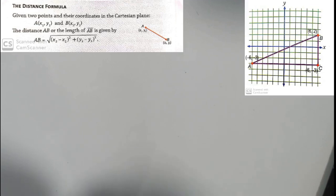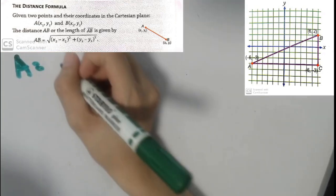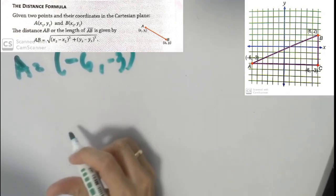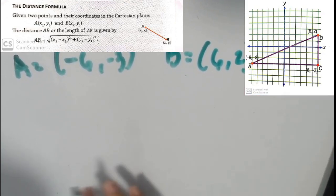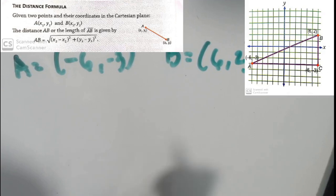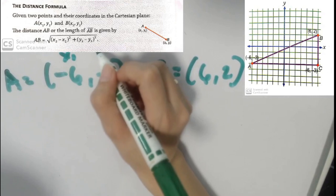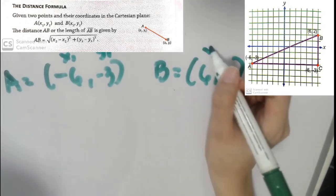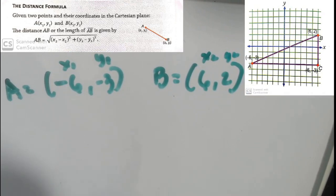For us to understand better, we're going to work on our first example. Given here a triangle drawn in a Cartesian plane, we need to find the distance between coordinates of A and B. The coordinates of A are negative 6 and negative 3, and the coordinates of B are positive 6 and 2. We let A become x sub 1 and y sub 1, and B become x sub 2 and y sub 2. After identifying the subscripts, we now use the formula.